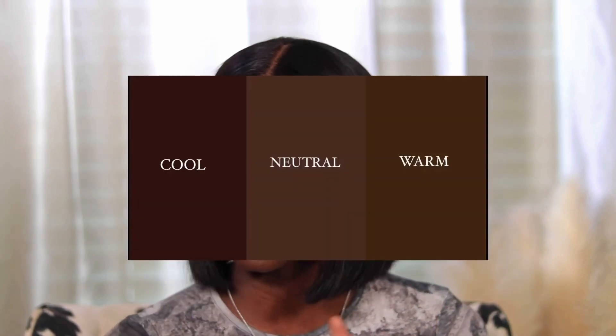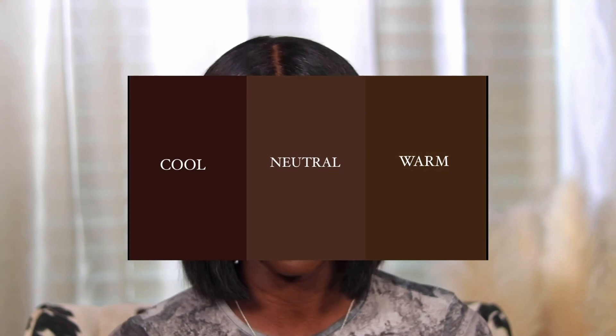The very first thing you need to know is your undertone. If you don't know your undertone, it's going to be easy to grab the wrong shade — one that matches your skin tone but not your skin's undertone. Your undertone is the color you see underneath your skin. The three main types are cool, warm, and neutral.